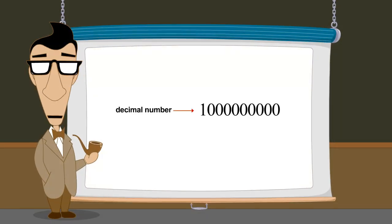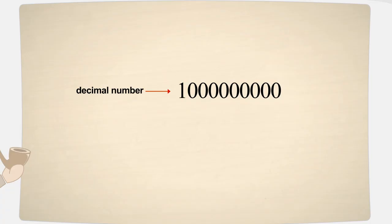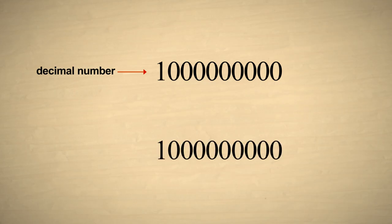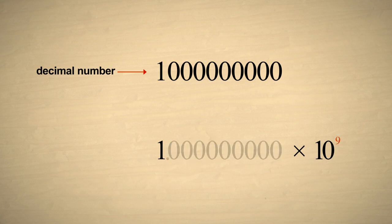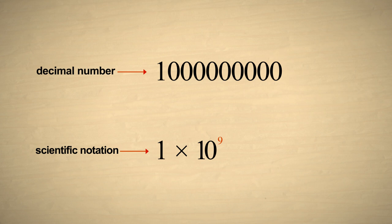Let's try writing the number one billion in scientific notation. Once again, we'll add a multiplier of ten to the zero power. Now to position the decimal point after the first non-zero digit, we will need to move it nine columns to the left. Therefore, we must increase the exponent of the multiplier by nine. The number is now written in scientific notation.